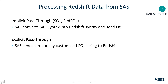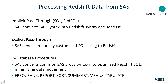We also have explicit pass-through, where users can write and send a customized and optimized SQL string directly to Redshift — this is about writing Redshift SQL query syntax and orchestrating it from SAS. Finally, there are in-database procedures: these are common SAS procedures that are converted into optimized Redshift SQL queries and executed in Redshift. Only the result set, expected to be small, is sent back to SAS for further processing. FREQ, TABULATE, and SUMMARY are examples of SAS procedures that can be pushed to Redshift transparently.